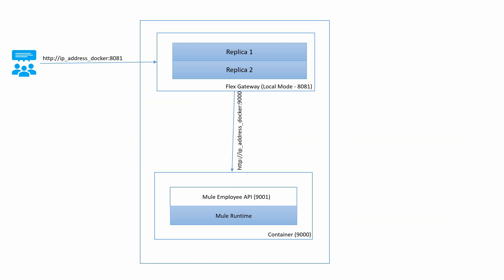Let me explain the scenario we are going to cover in this video. There is a small diagram on my screen which we have already covered in our last video, where I have a Flex Gateway running multiple replica instances. I have a container running on port 9000, which is running a Mule application on port 9001. The client will send the request to the Flex Gateway in local mode, the Flex Gateway will authenticate the request using basic authentication, and then transfer the request to the container on port 9000, which will call the Mule employee API on port 9001.